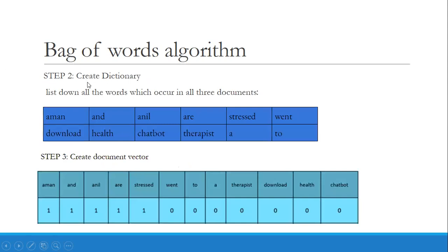Second step, we need to create a dictionary. What are we supposed to do? List down all the words which occur in all three documents without repetition. That means all the words you are considering should be unique words which will not be repeated. We call this a dictionary.